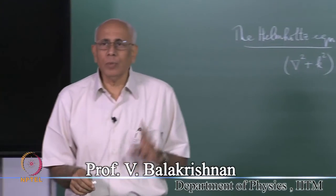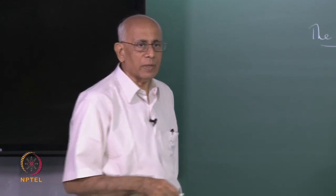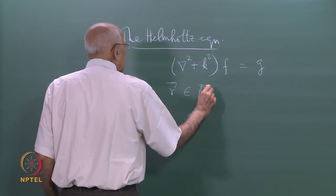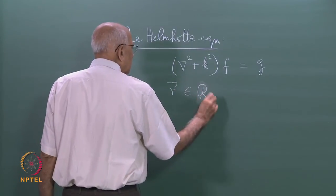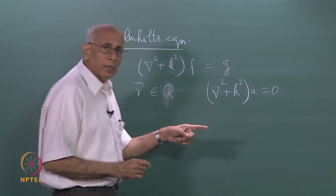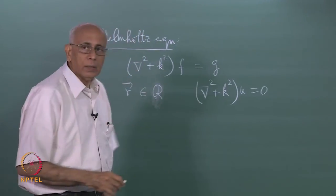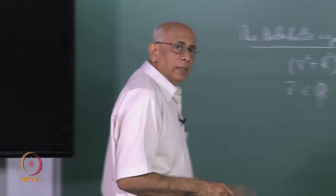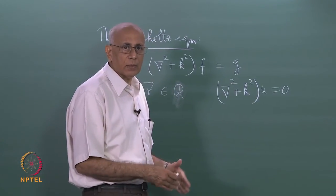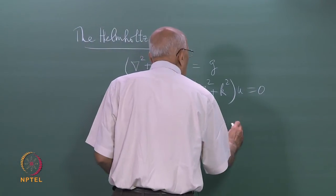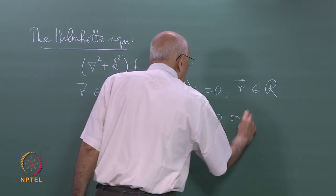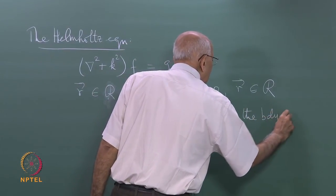You will recognize the homogeneous version of this as describing the normal modes of a region. If your position vector r is an element of some region R, then this equation del squared plus k squared on u equal to 0 in this region is the homogeneous Helmholtz equation. It describes the normal modes of vibration of this region R, provided you satisfy certain boundary conditions.